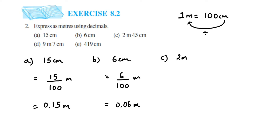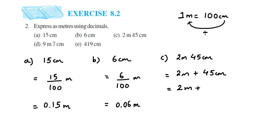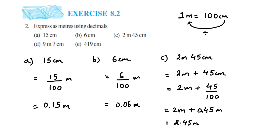Next: 2 meters 45 centimeters. This can be written as 2 meters plus 45 centimeters. The 2 meters is already in meters, so we only convert 45 centimeters. That gives 2 meters plus 45 divided by 100. We have two zeros in the denominator, so placing the decimal two places from the right: 5, then 4, decimal, then 0 — giving 2.45 meters.